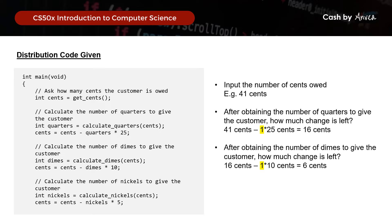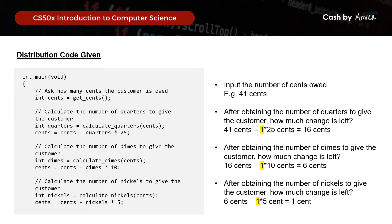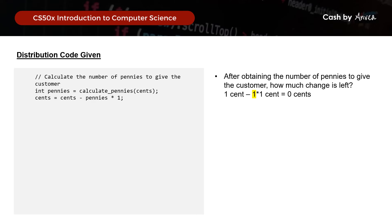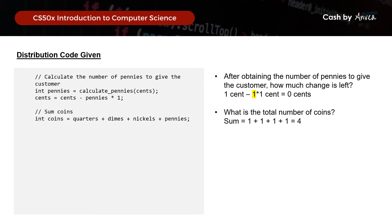We declare an integer called nickels and use calculate_nickels to determine how many nickels to give the customer. After that, we calculate the balance: 6 minus 1 times 5 cents, leaving 1 cent. We then do the same with pennies and issue 1 penny. Finally, we add up the total number of coins and print the final answer — in this example, a total of 4 coins.